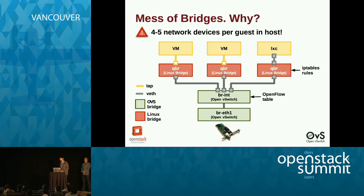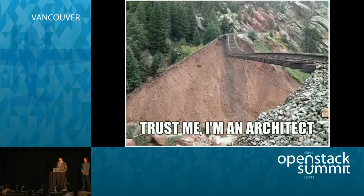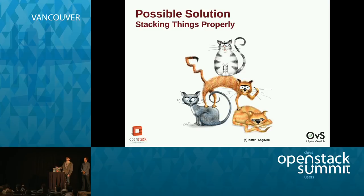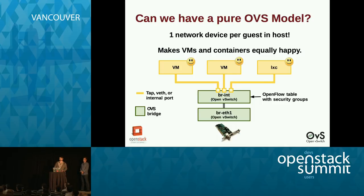You might ask why not do all this with OpenVSwitch and OpenFlow rules. The reason is that at the time this was implemented in the Neutron community, there were not enough tools from OpenVSwitch to make a solution in feature parity with what IP tables would offer. One possible solution is to remove that extra layer of bridges so that when you create VMs or containers, you use just one single device for attaching them to the integration bridge, using OpenFlow rules for implementing security groups with the new tools that OpenVSwitch can offer.